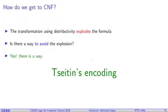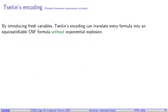Yes, there is a way and this method is called Tseitin encoding. Since there are no free lectures in this world, there comes with a cost. So let's look at the Tseitin encoding. By introducing fresh variables, Tseitin encoding can translate every formula into an equi-satisfiable CNF formula without exponential explosion.